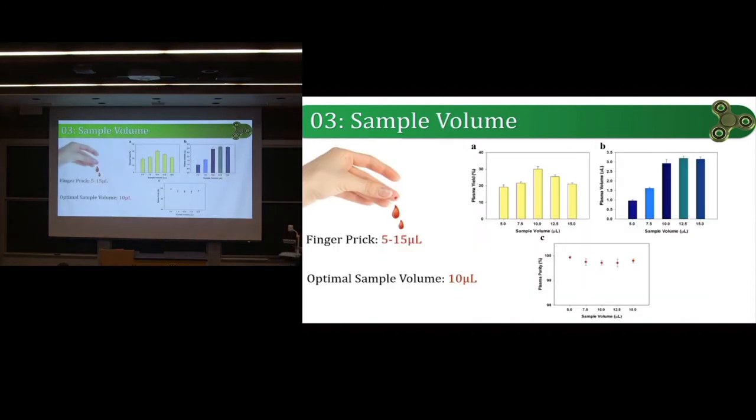Next, the authors investigated the effect of sample volume on the plasma yields. We see that the amount you get from a simple finger prick is roughly 5 to 15 microliters. We tested and we found that the 10 microliter sample range yields the most plasma by comparison to the overall sample volume. There's no real theory behind this. It's just purely experimental data. But the important part is that you can receive enough plasma volume to do your tests from a simple finger prick. And I'd also like to note at this point that the plasma purity across all these tests have been nearly 99 percentile.